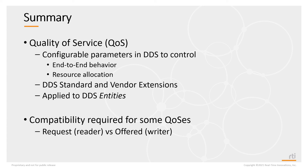In summary, quality of service is a set of configurable parameters in DDS that allows you to control anything from end-to-end behavior to resource allocation. There are both DDS standard QoS policies as well as vendor extensions, and these QoS values are applied to the DDS entities you create. For some QoS policies, there is request versus offered, where the reader requests a certain level of service and the writer offers a certain level of service, and these values must be set compatibly for a connection to happen between the reader and the writer.